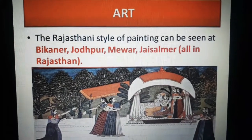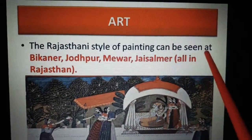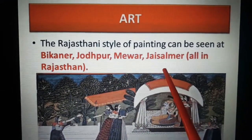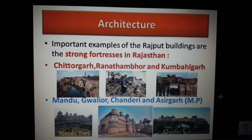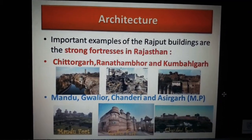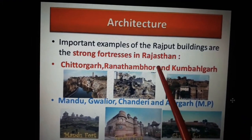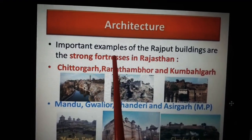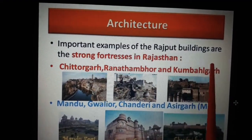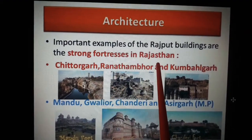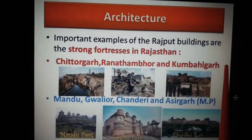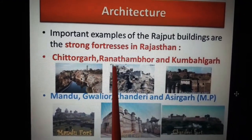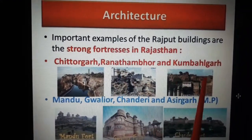The Rajasthani style of painting can be seen at Bikaner, Jodhpur, Mewar, and Jaisalmer. Next, the contribution of Rajputs to architecture. Rajputs are very great builders. Some important examples of Rajput buildings are the strong fortresses in Rajasthan, as well as in Madhya Pradesh. In Rajasthan, these can be found at Chittor, Ranthambore, and Kumbhalgarh.